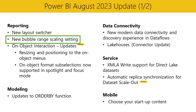Moving on to the new bubble range scaling setting, we are introducing this new setting for scatter chart and map visuals. It gives report creators more control over how bubble marker sizes respond to data, making it more accurate or distinctive based on your preference. With the magnitude option, bubble areas closely follow data proportions. With the data range option, bubble size limits are mapped to data minimum and maximum. The auto option, which is the default for new reports, selects the appropriate option based on data characteristics. This setting can be adjusted in the formatting panel under markers, shape, and range scaling for scatter charts, or bubbles, size, range scaling for maps.